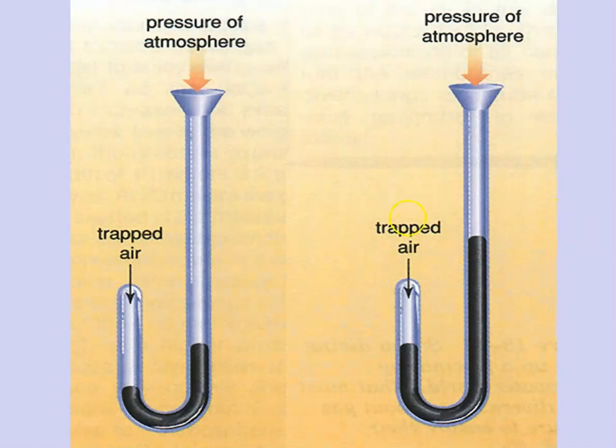This is what his J-tube looked like. Here you're going to see that there's a tube and he trapped some air in it by putting in some mercury.